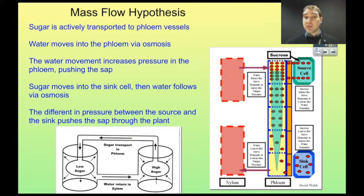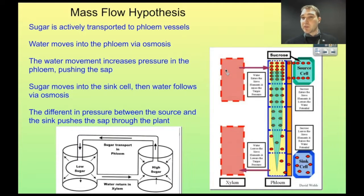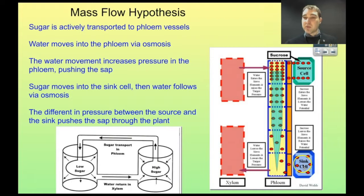This movement is known as the mass flow hypothesis. We have active transport of sugar into the phloem vessels from the source cells. There's a high concentration inside the phloem, so we need to pump the sugar in using energy from the cell. Since there's a high concentration of sugar, we need water coming in too. Water will move through osmosis from a region of low to high concentration, so we need more water in there to balance out the concentration. We have pressure at the top where water is pushing in. Down at our sink cell, sugar moves out, creating a difference in pressure from top to bottom, so water pushes its way down and pushes the sap through the phloem to our sink cell.